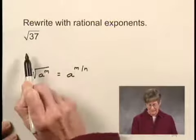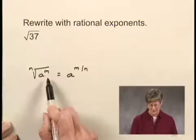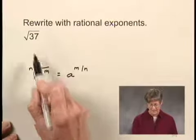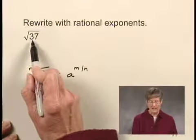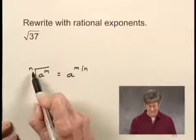And what do we have here? We have 37 to the first power under the radical sign, so the exponent m is 1. And when we have a radical written like this without an index, we know it's a square root, so the index is 2. So our n is 2 here.